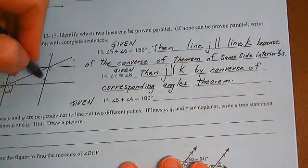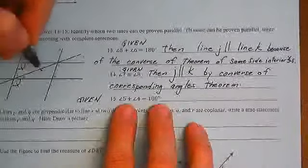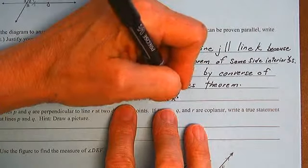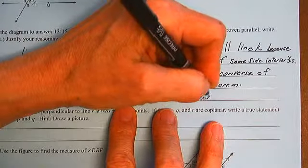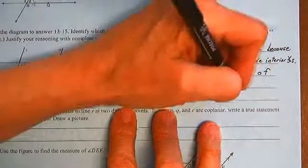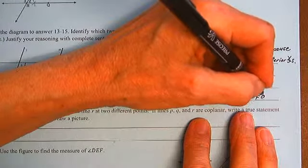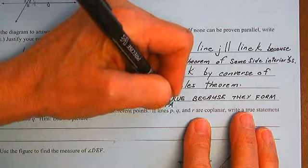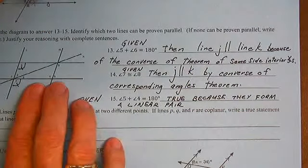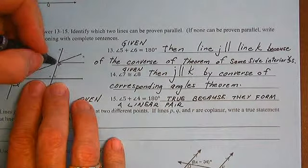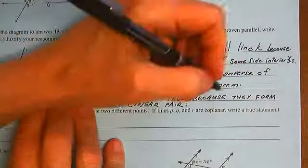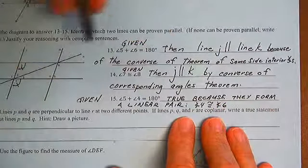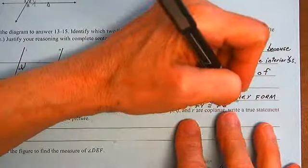Given angle 5 plus angle 4 equals 180 degrees, that is true because they form a linear pair. Also true: angle 4 is congruent to angle 2, angle 4 is congruent to angle 6, and J is parallel to K. Alternate interior angles.